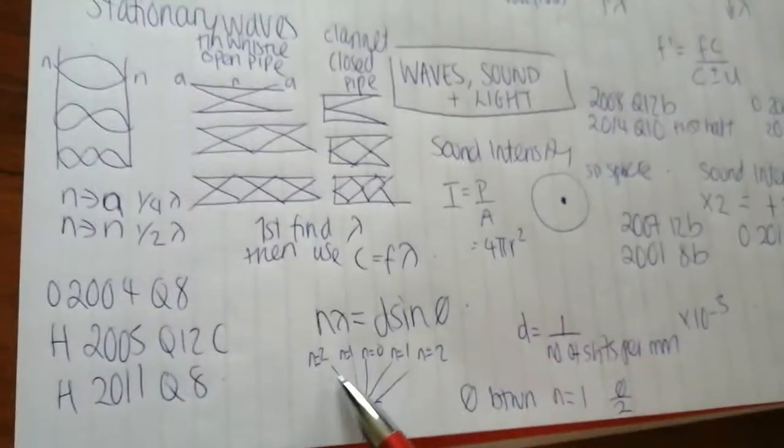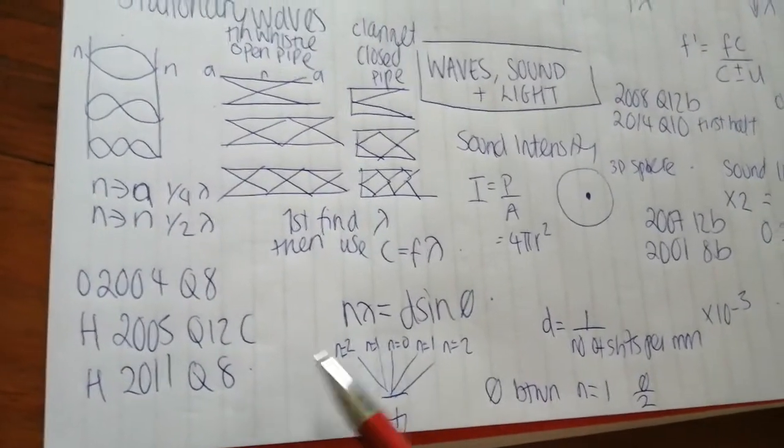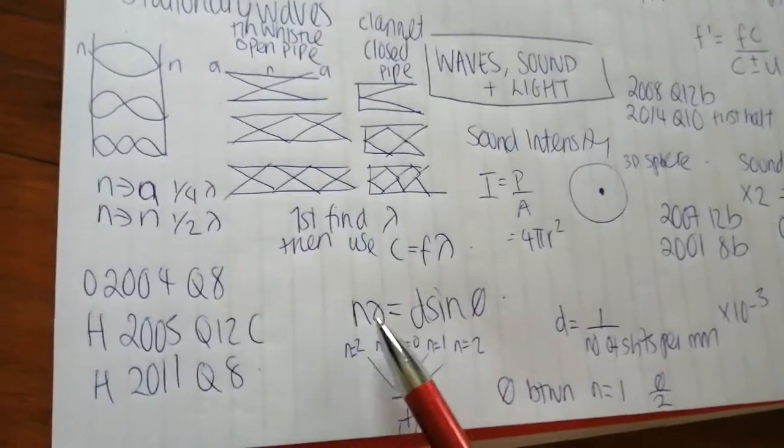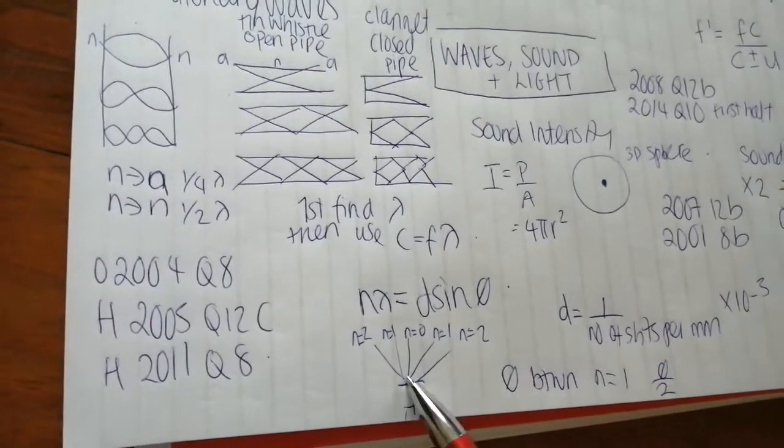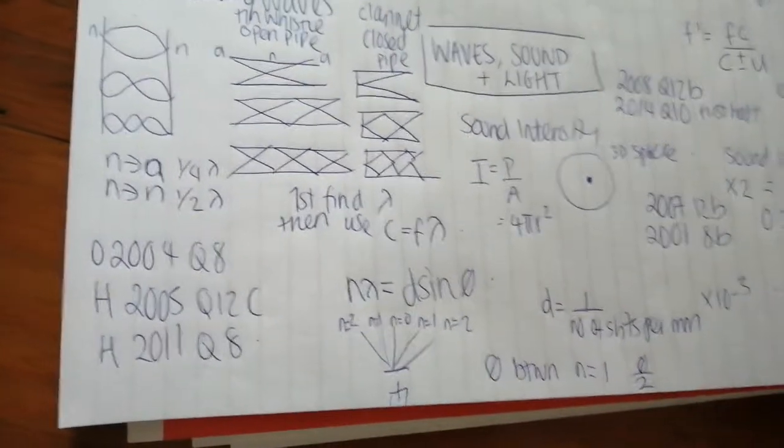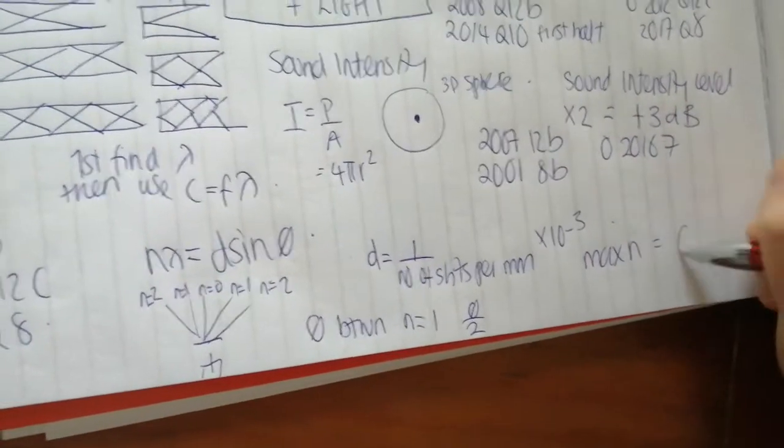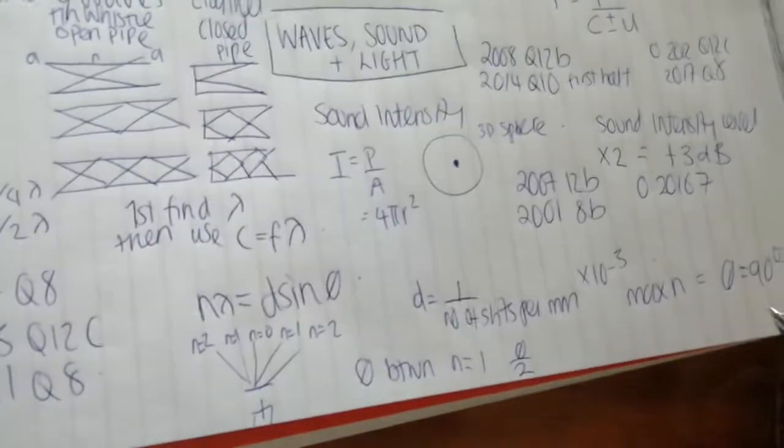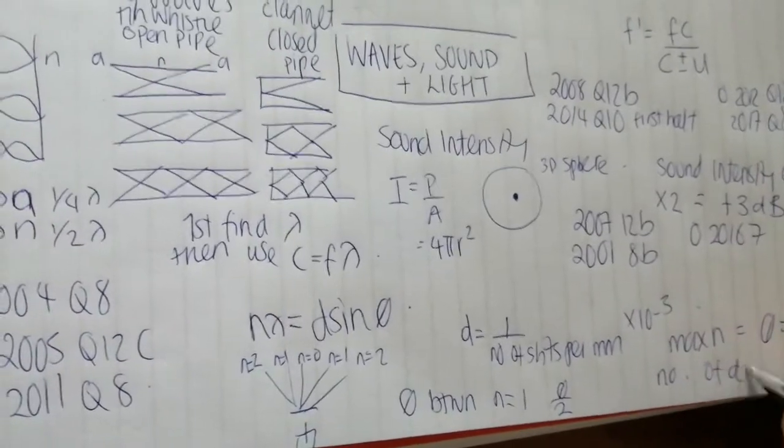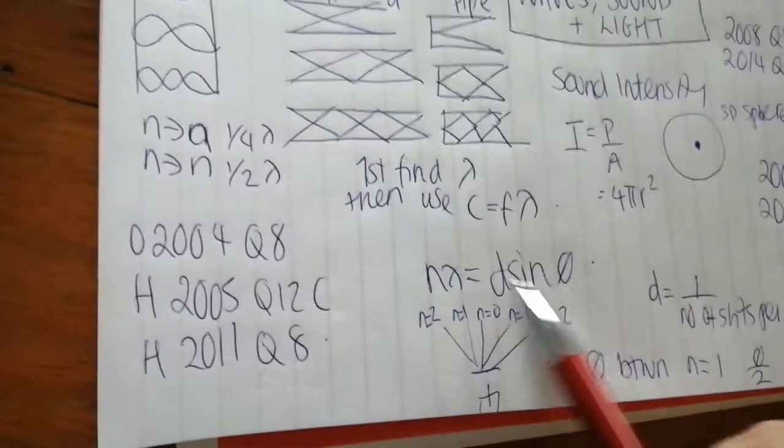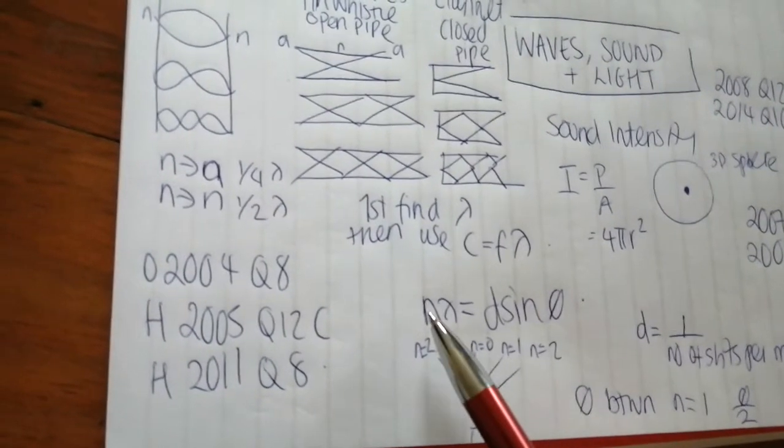Other things that you might be asked. If you're asked to find the max number of dots that can be produced or the max order of images, what you need to do is let sine theta, the angle be equal to 90. That's the max angle that theta could be equal to. So for max N let theta equal 90 degrees. Other things that you could be asked is for the number of dots. So you would use this formula, you find out N and let's say we had, for example, like the one I've drawn here, you found out N is equal to two.